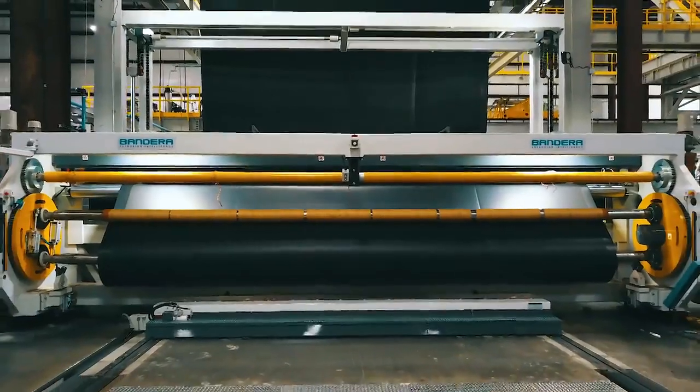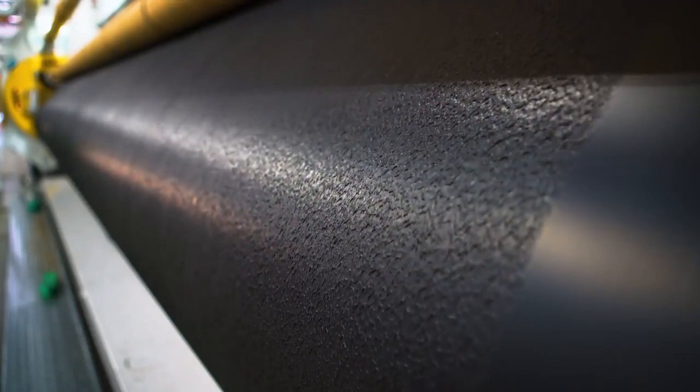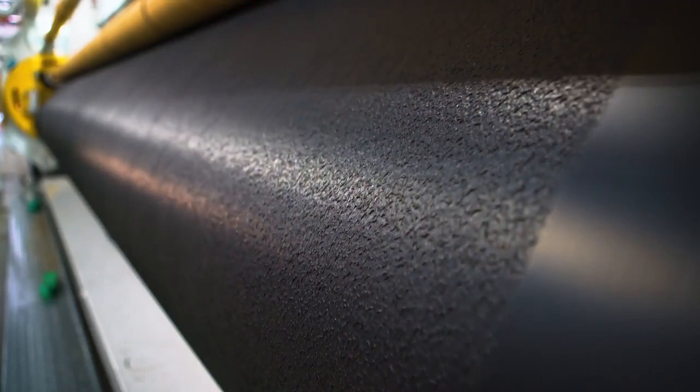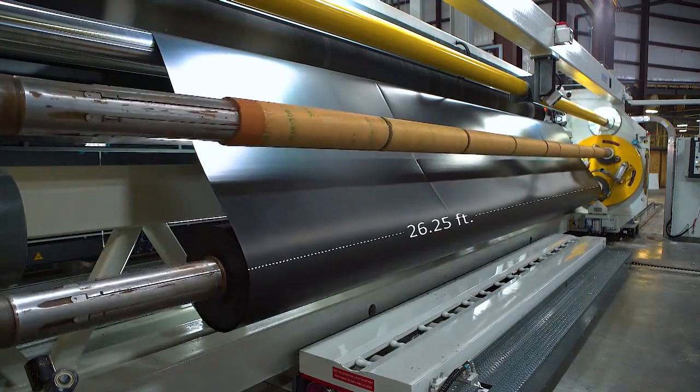The standard width of geomembranes is 23.5 feet and we have the capability to make the widest textured sheet in North America. Our products can be offered as wide as 26.25 feet.